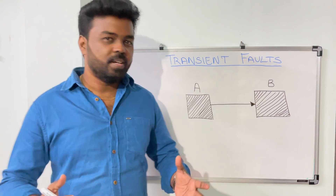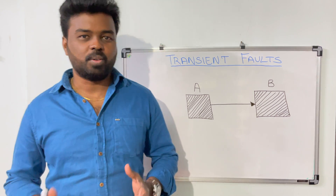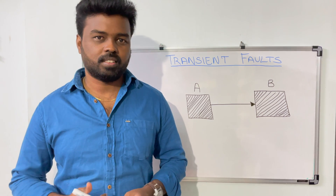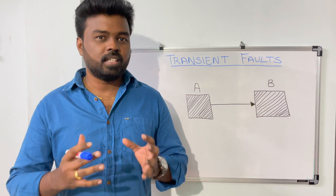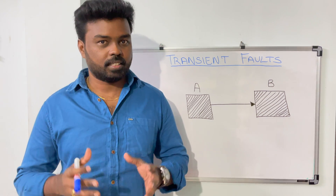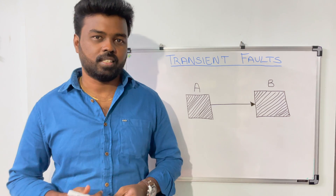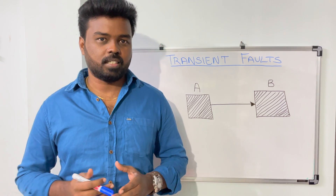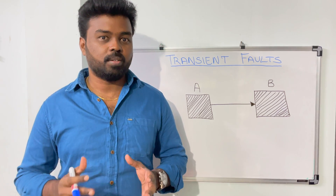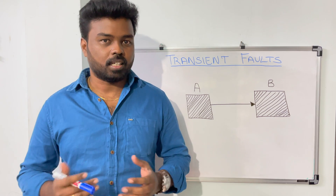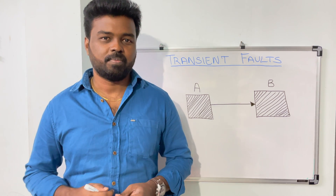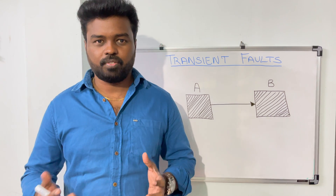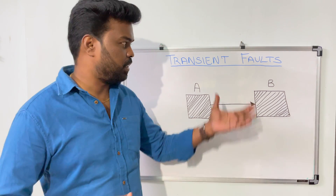When you build a system, the goal is not to build a system without any failures, but to build a system which has the ability to handle failures. An ideal resilient system has the ability to handle or recover from failures as soon as possible. In this video, we are going to talk about one such kind of failure: transient faults.